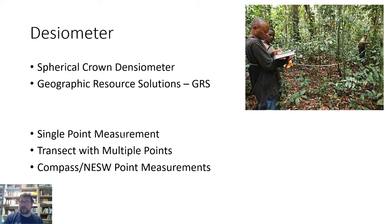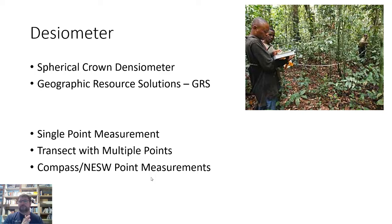That's just another method of randomizing the data. If you're interested in a single tree, you often do what's called the compass point measurement, or N-E-S-W (north, east, south, west) point measurement, where you take measurements at the four corners of a tree. That might be useful if you have a bald eagle nest or a spotted owl nest and you're interested in what canopy cover is attracting that bird to that specific point.